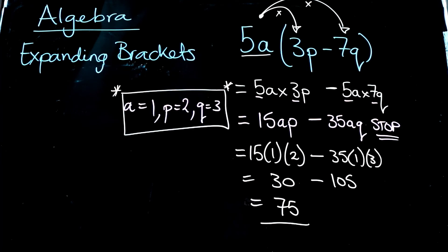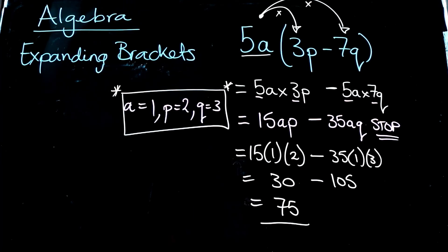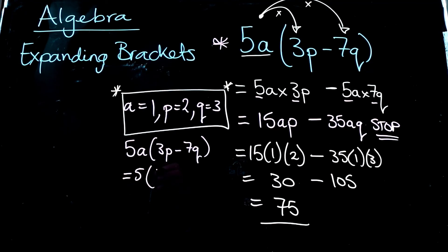Now, just to finish up, I want to take this again. I want to reassure you about this idea of equivalence. So the original thing that we worked on, I'm just going to write it out again, 5a times 3p minus 7q, and we should get the same answer. So substitution-wise, 5 times 1 is still 5. And we've got 3 times p, which is 2. Subtract 7 lots of q, which is 3.